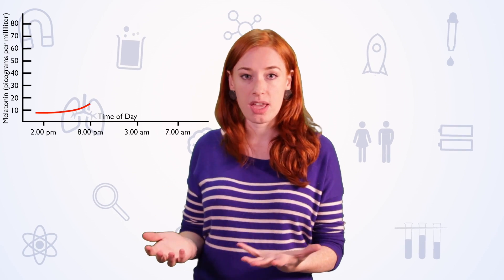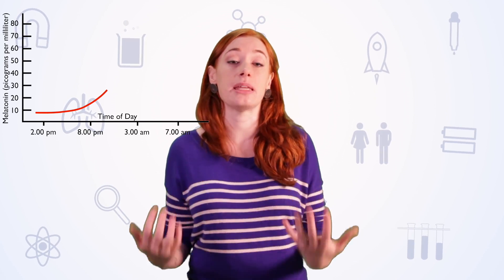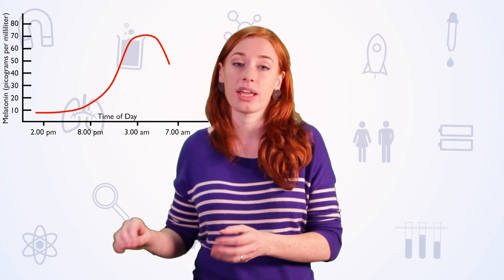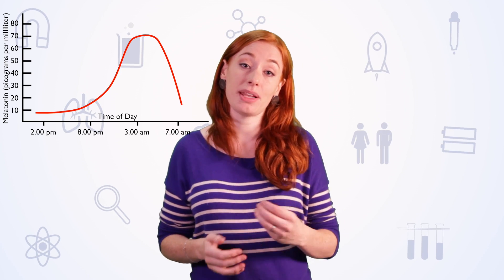Now this gland releases something called melatonin which starts to kick in around nine o'clock in the evening just as you start to wind down and sleep becomes a bit more inviting. Then melatonin will remain high in your body for about 12 hours while you're sleeping and then gradually reduce in the morning so that it's barely detectable in the middle of the day.